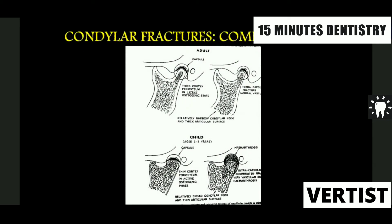If there is an adult condylar fracture, it is usually extracapsular. While in a pediatric patient, the periosteum is very thin, the cortex is thin, and there is high periosteal activity. So if there is haemarthrosis, obviously it is going to get reorganized and formed into an ankylotic mass.